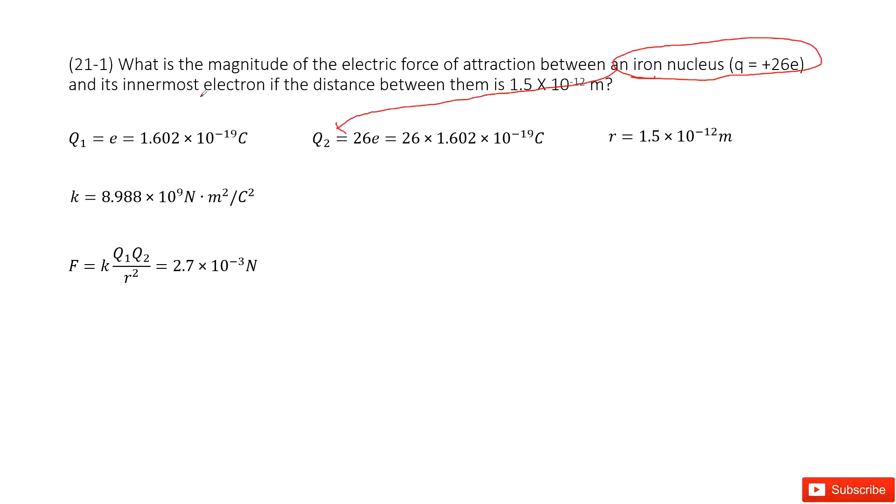And then it has another one, electrons. So an electron just has one elementary charge. Agree? And also the distance is given as r.